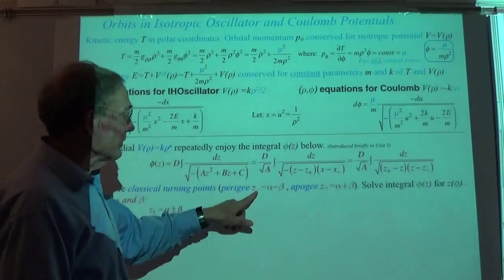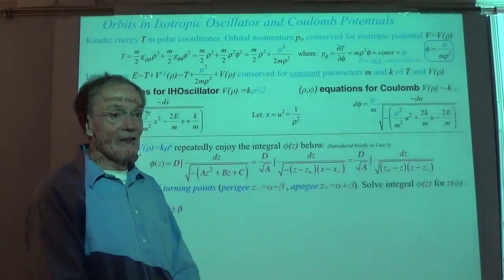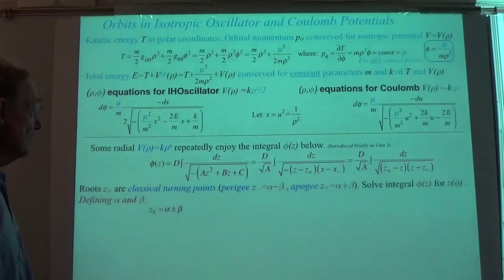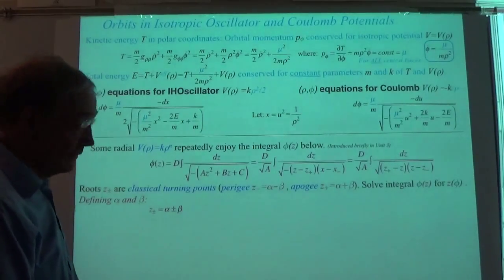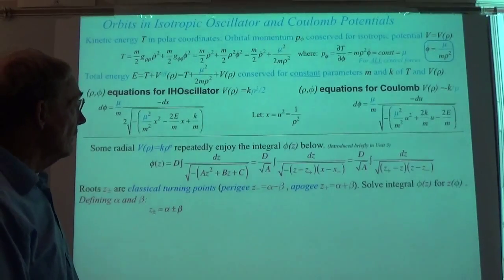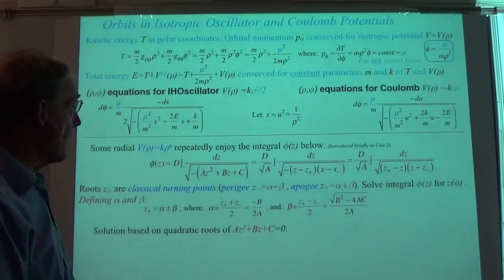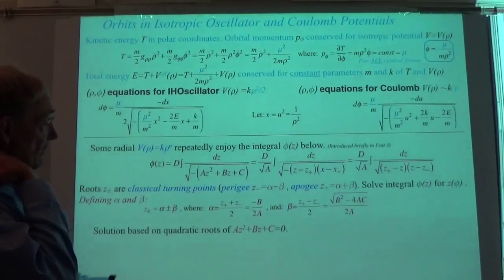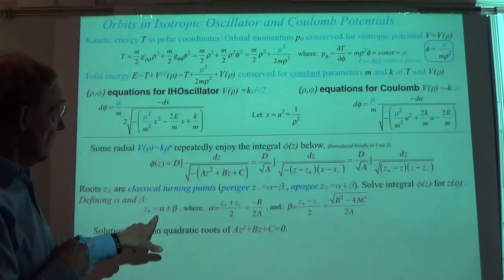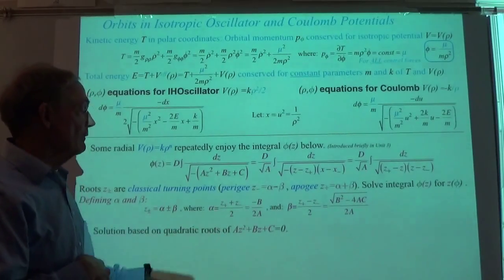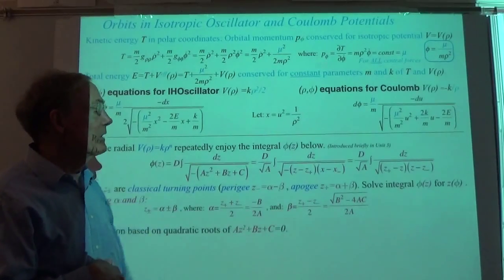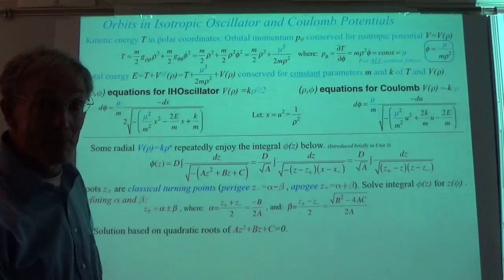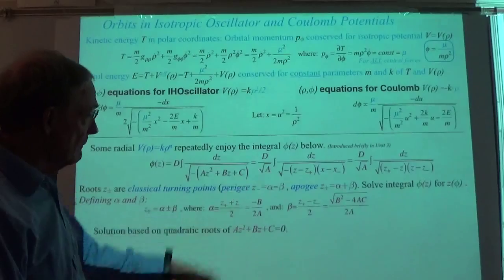Both have turning points in the effective potential. The classic perigee and apogee — this one has two of them, whereas the oscillator only has one. But it doesn't matter; the symmetry lets them take the same values. We have to solve the integral for that — and that's pretty standard. The solution comes from alpha = −b/2a and beta = √(b²−4ac)/2a, where one is the average of the roots and the other is half the difference. So there's your quadratic equation written in a way that shows symmetry and anti-symmetry.